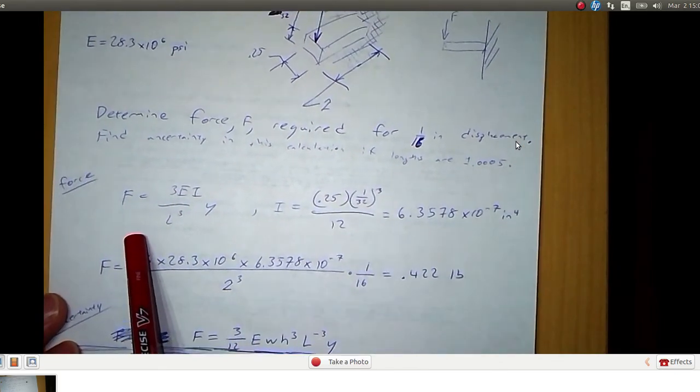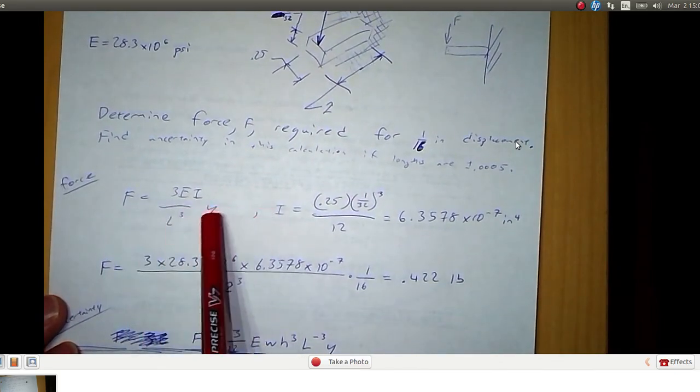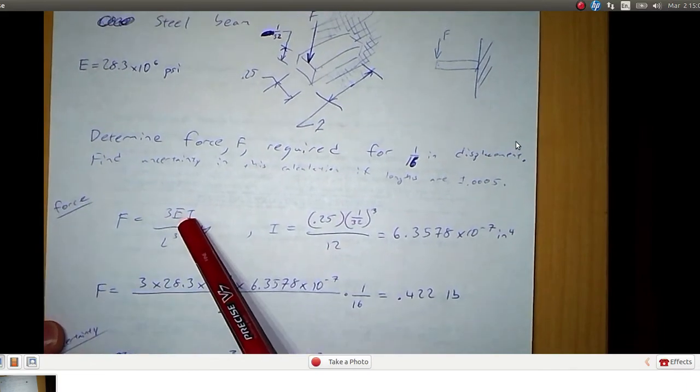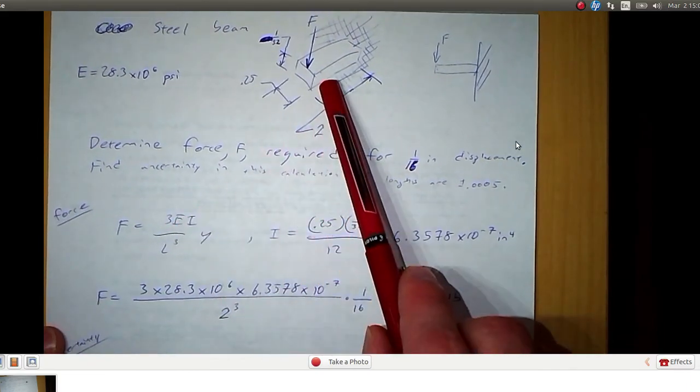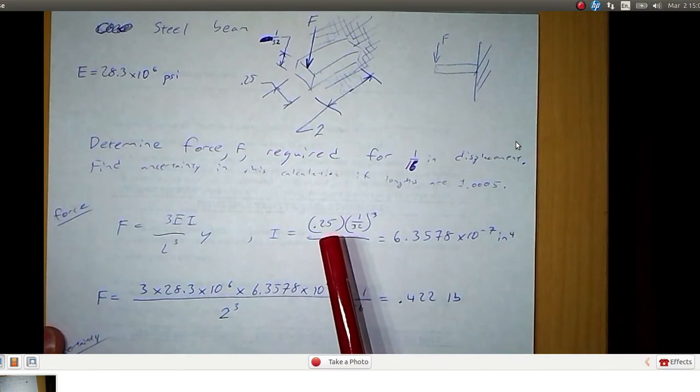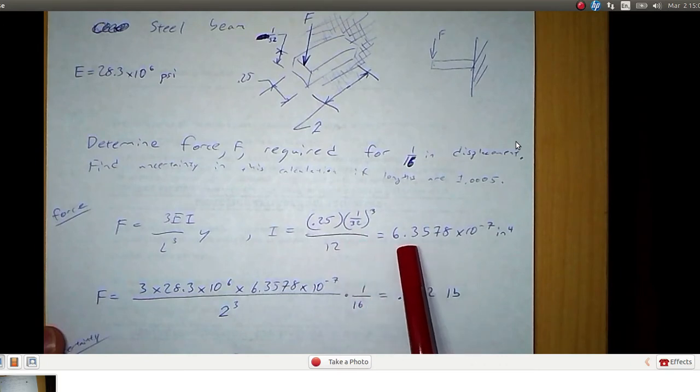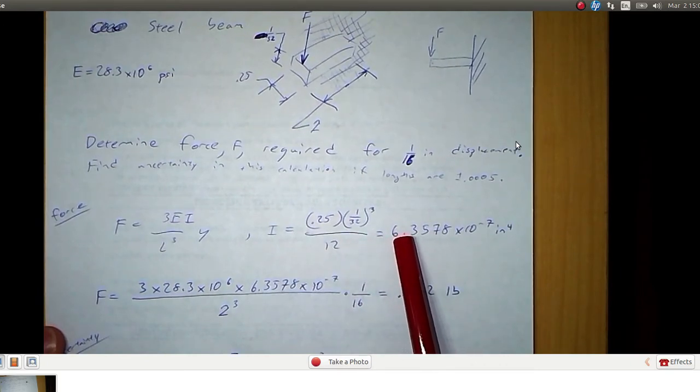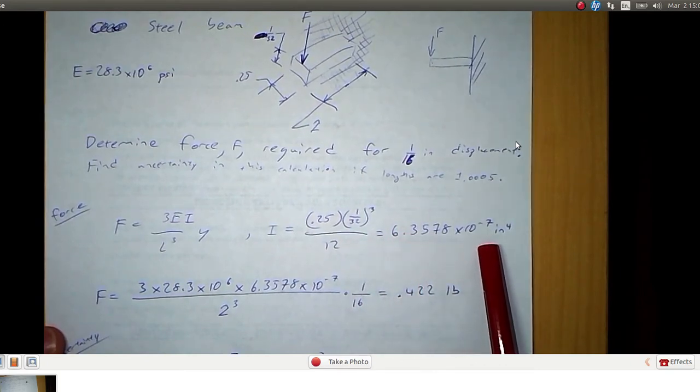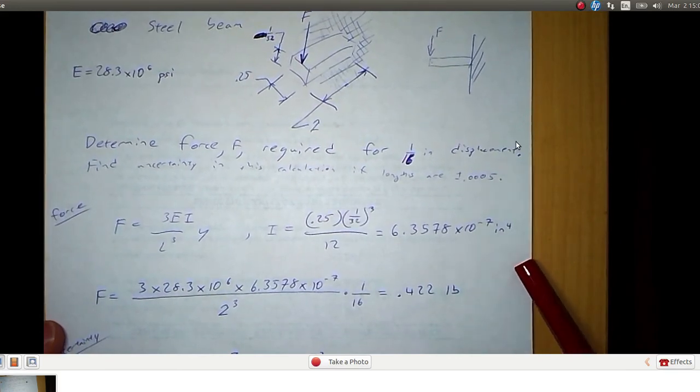First the force. Here is that expression again, 3 times EIY over L cubed. I is the area moment of inertia for the beam cross section. And for a rectangle that is the width times the height cubed over 12. So substituting these values in we get that moment of inertia is 6.36 times 10 to the negative 7. The units for that are inches to the fourth.